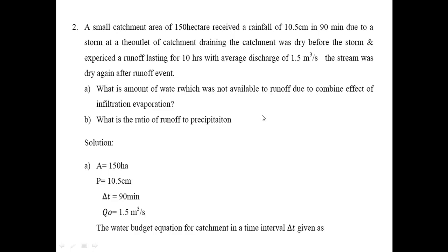Part B: What is the ratio of runoff to precipitation? In this example, we have to calculate the amount of water not available for runoff due to the combined effect of infiltration and evaporation, and also calculate the ratio of runoff to precipitation. Given data: catchment area is 150 hectares, rainfall received is 10.5 cm, storm duration is 90 minutes, runoff lasted 10 hours, and average discharge during runoff is 1.5 cubic meters per second.